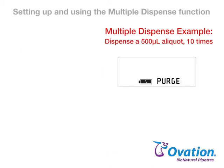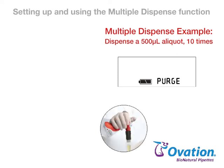After the final volume is dispensed, Purge appears on the display. Press and release the pipetting trigger to discard any remaining liquid in the tips. Purge can also be used at any time to end a liquid handling function by simply pressing the center button followed by the pipetting trigger.